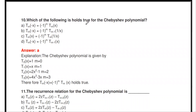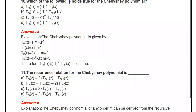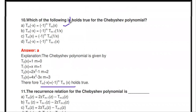Which of the following holds true for the Chebyshev polynomial? The Chebyshev polynomial is defined as: T₀(x) = 1 when m = 0; T₁(x) = x when m = 1; T₂(x) = 2x² − 1 when m = 2. The general relation is: Tₘ(−x) = (−1)ᵐ Tₘ(x). So the Chebyshev polynomial satisfies the condition Tₘ(−x) = (−1)ᵐ Tₘ(x).